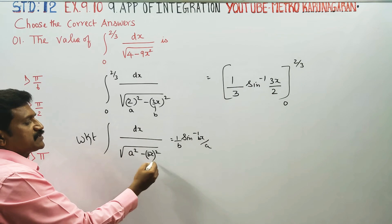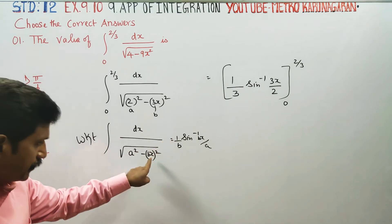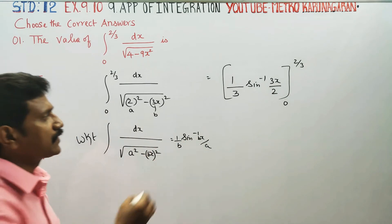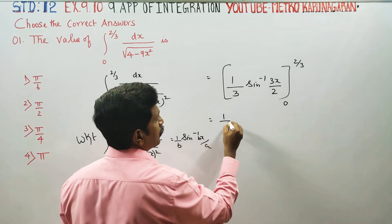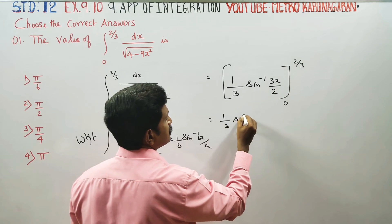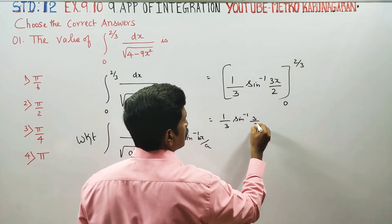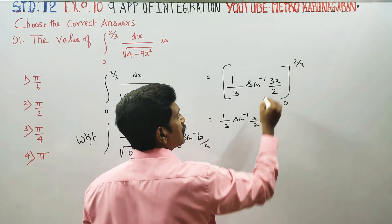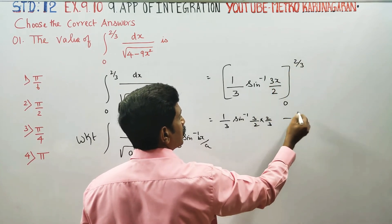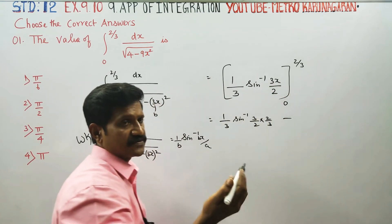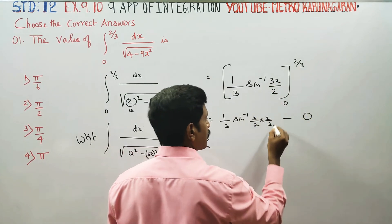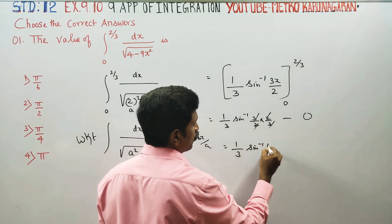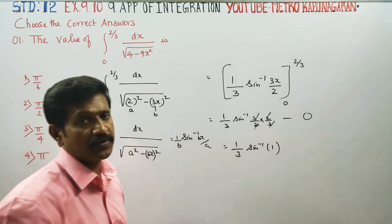Square root of a² minus bx² formula, 1 by b, which is sin inverse of bx by a.